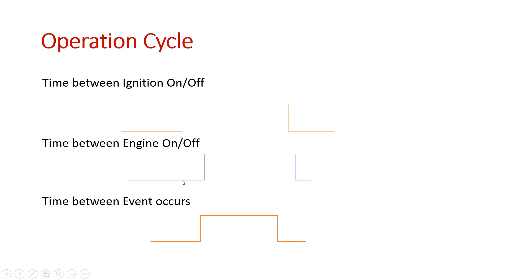What exactly is the operation cycle? There is not a single meaning for it. Operation cycle can mean: the time between ignition on and off — note you are not turning on the engine, just the ignition; the time between engine on and off; or the time between when any event occurs. Even ignition on/off is an event, and engine on/off is another event. In AUTOSAR, it is considered as an event specifically.